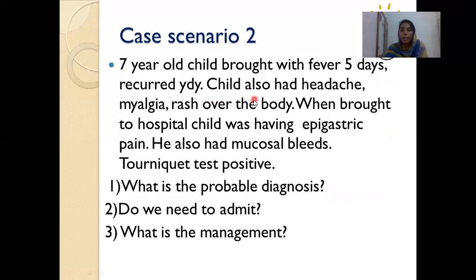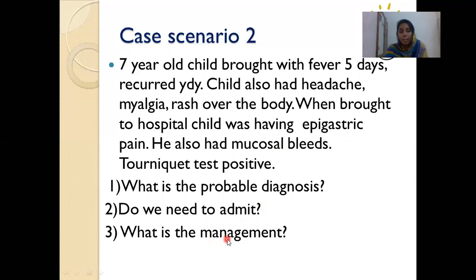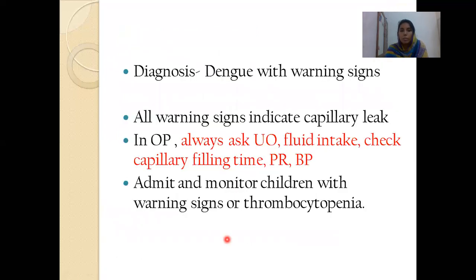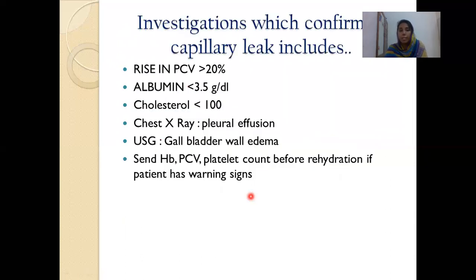Scenario 2: A 7-year-old with fever for 5 days, headache, myalgia, rash, epigastric pain, mucosal bleeds — tourniquet test positive. This is dengue with warning signs. All cases of dengue with warning signs should be admitted. Management: the warning signs indicate capillary leak — assess urine output, fluid intake, capillary refill time, pulse rate, BP, and pulse pressure. Admit and monitor because these children tend to progress to severe dengue.